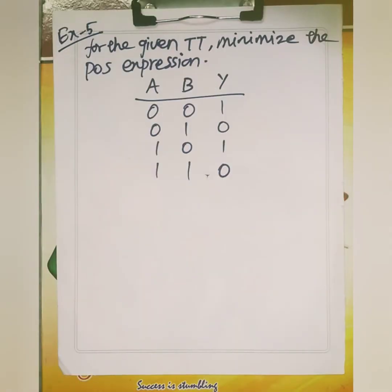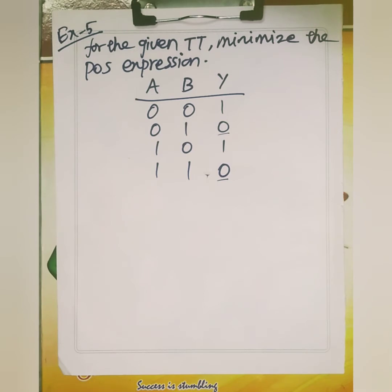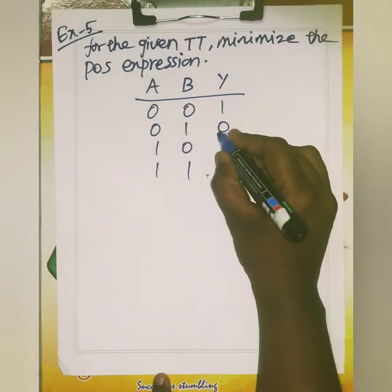This is your fifth exercise. The truth table is given for two variables, and they are asking you to minimize the product of sums expression. In case of product of sums, you have to write the function when the output is low. In SOP case you write when output is high, but here in POS you write when output is low.